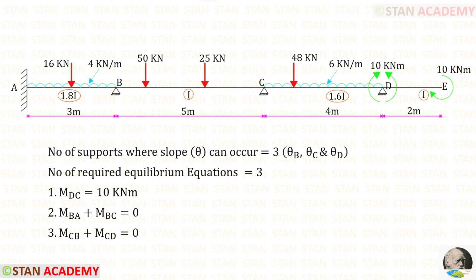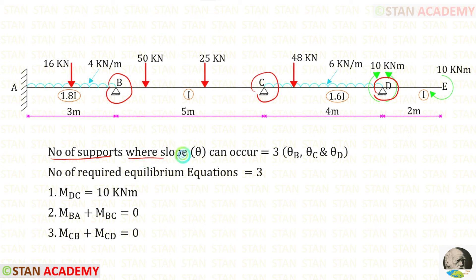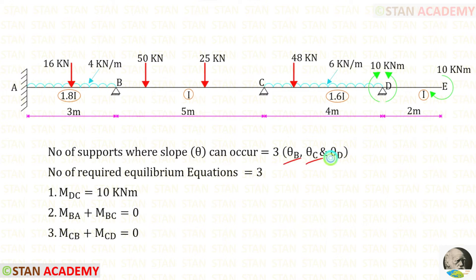In the slope deflection method, we have to check the number of supports where slope can occur. At points B, C and D there are hinged supports, so the number of unknowns is 3: theta B at point B, theta C at point C, and theta D at point D. To find these three unknowns, we need three equations.